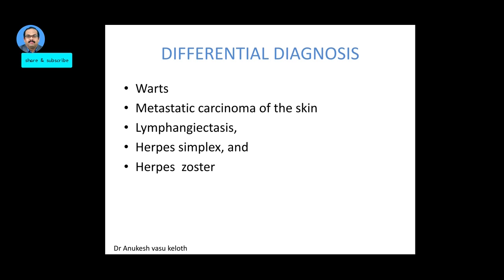Some common differential diagnoses: smaller lesions have to be differentiated from warts or metastatic carcinoma of the skin. Lymphangiectasia has to be differentiated from the congenital variety. Small lesions like herpes simplex and herpes zoster also have to be ruled out.